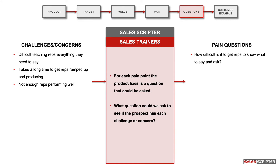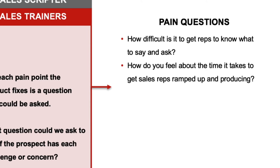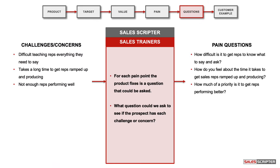Going through this list one at a time, we can come up with pain questions such as: how difficult is it to get reps to know what to say and ask? How do you feel about the time it takes to get new sales reps ramped up and producing? How much of a priority is it to get reps performing better? These questions are better than asking generic openers like 'how's everything going?', 'are you having any challenges?', or 'what are your pain points?'